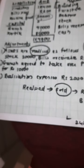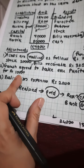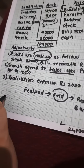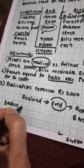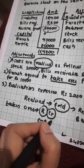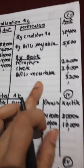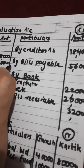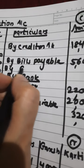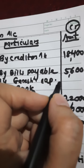Second adjustment: Ganesh agreed to take over the furniture at rupees 10,000. Whenever an asset is taken over, write down the rule — Asset Taken Over: the effect is Realization credit and Capital debit. Realization credit, Capital debit. Where is realization? Here it is. So I am writing here — 'By Ganesh's Capital,' and the amount of the takeover is 10,000.